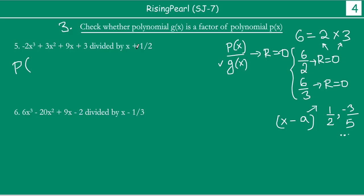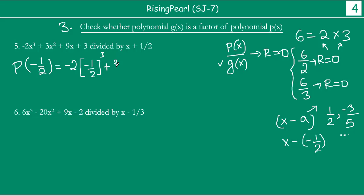It is x plus 1/2, so we rewrite this as x minus (minus 1/2). So we have to find the remainder — that is, find the value of the polynomial P(x) at x equal to minus 1/2. Let us write it down: minus 2 times (minus 1/2) cubed, plus 3 times (minus 1/2) squared, plus 9 times (minus 1/2), plus 3.